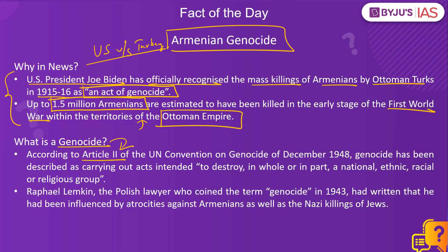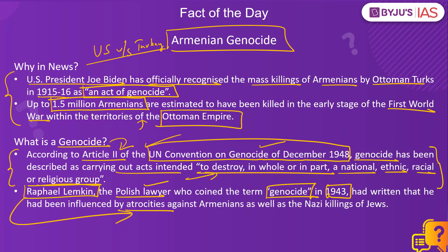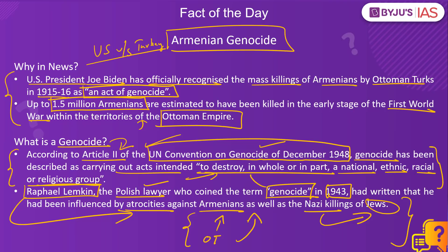Genocide has been defined under Article 2 of the UN Convention on Genocide, adopted in 1948. It refers to any planned state-sponsored attack against people of a particular nation, ethnicity, race, or religious group with the intention of destroying the entire group. The term was first coined in 1943 by Polish lawyer Raphael Lemkin, who was deeply affected by the atrocities committed against the Armenians by the Ottoman Turks and by the killings of Jews by the Nazis. He coined the term genocide to describe acts of mass violence targeted against a group, eventually leading to the UN Convention on Genocide with legal implications for any government sponsoring such acts.